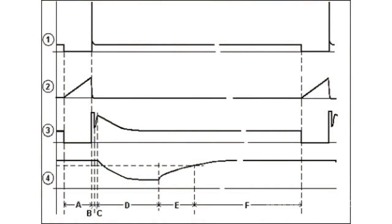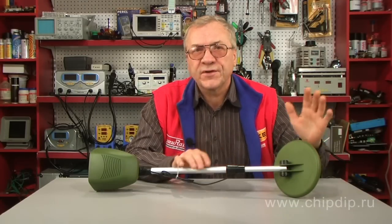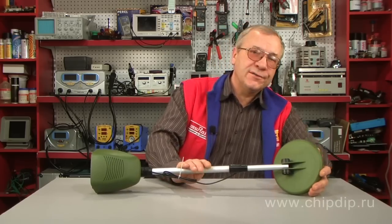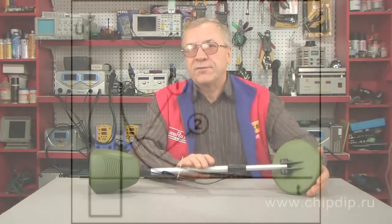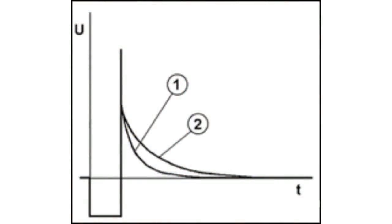Conducting objects induce the decaying vortex currents which actuate the decaying electromagnetic field. The field in its turn induces the decaying current in the sensor's coil. The signal then changes its form and duration depending on the conducting properties and size of the object.